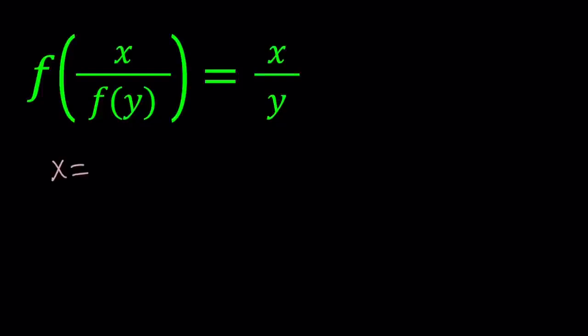Let's go ahead and try it. For example, what happens if x is equal to 1? You get f of 1 over f of y equals 1 over y. That doesn't really help much. I can't really proceed with this.